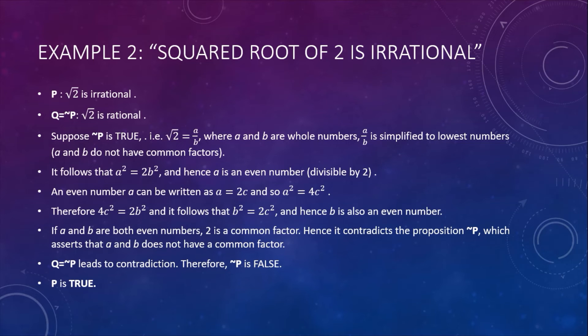But if a is an even number, then we can write that a = 2c, and so a² = 4c². We substitute this into the previous equation and obtain that 4c² = 2b². Hence b² = 2c², and therefore b itself is also an even number.